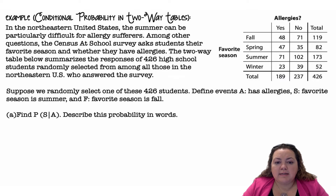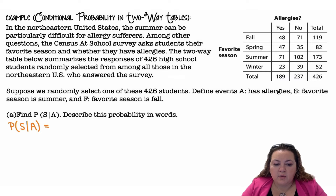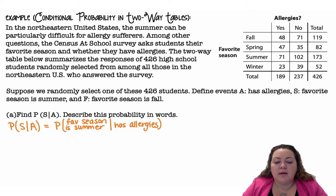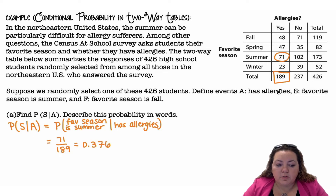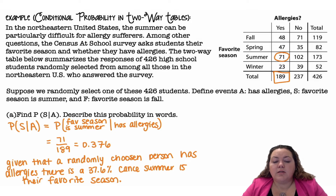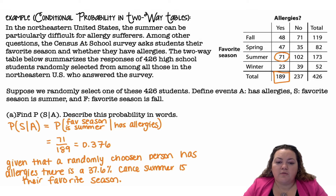Find the probability of S given A, and describe this probability in words. The probability of S given A is the probability that the favorite season is summer given they have allergies. Going to the table: summer and has allergies is 71, divided by the total for has allergies, which is 189. That gives us 0.376. To interpret: given that a randomly chosen person has allergies, there is a 37.6% chance summer is their favorite season.